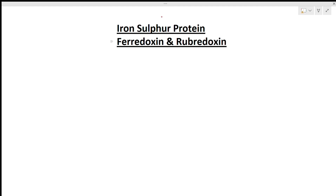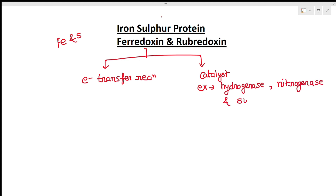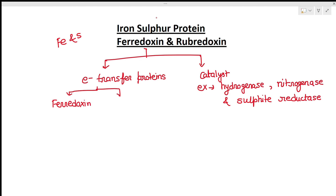Iron-sulfur proteins are proteins that contain iron and sulfur. From the name, you can understand these proteins are of two types: one type is involved in electron transfer reactions, and another type is used as catalysts. Examples of catalyst iron-sulfur proteins are hydrogenase, nitrogenase, and sulfide reductase. The electron transfer proteins are basically two: ferredoxin and rubredoxin.